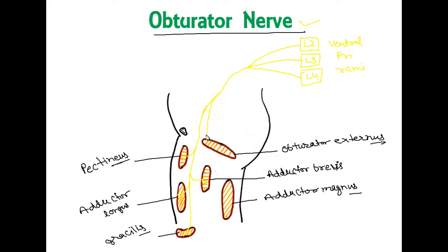The posterior division pierces the obturator externus muscle and passes downward between the adductor brevis and the adductor magnus. It supplies these three muscles and continues as the genicular branch. It also gives some branches to the hip joint.